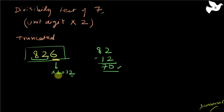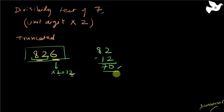To repeat: whatever number you have, take the unit digit and multiply it by 2. After removing the unit digit, take the remaining number — 82 in this case — and subtract twice the unit digit from that truncated number. Check the result for divisibility by 7. If it is divisible, then the initial number was also divisible by 7.